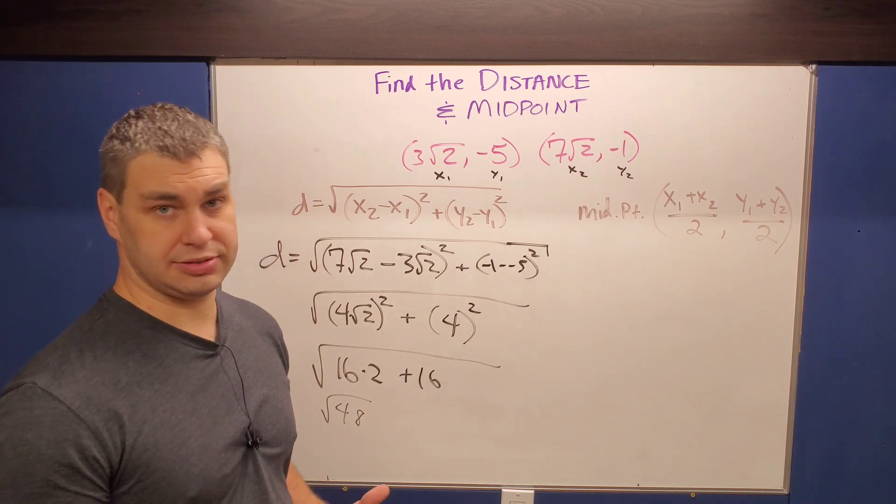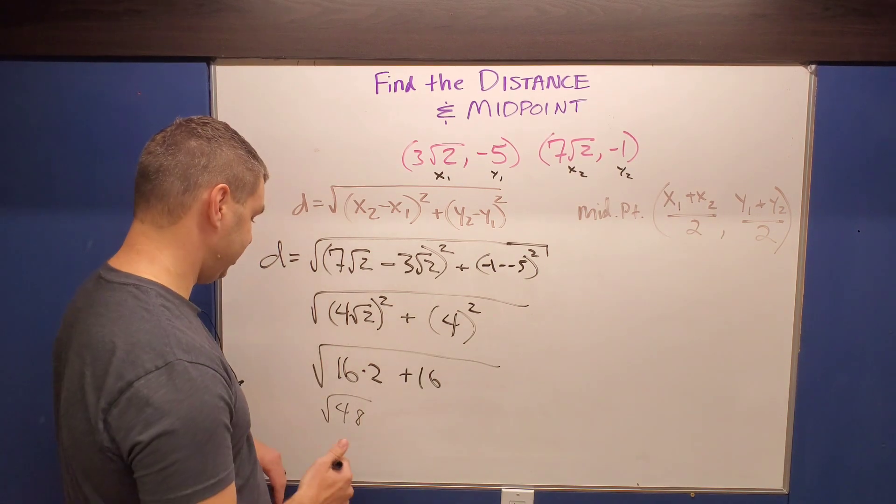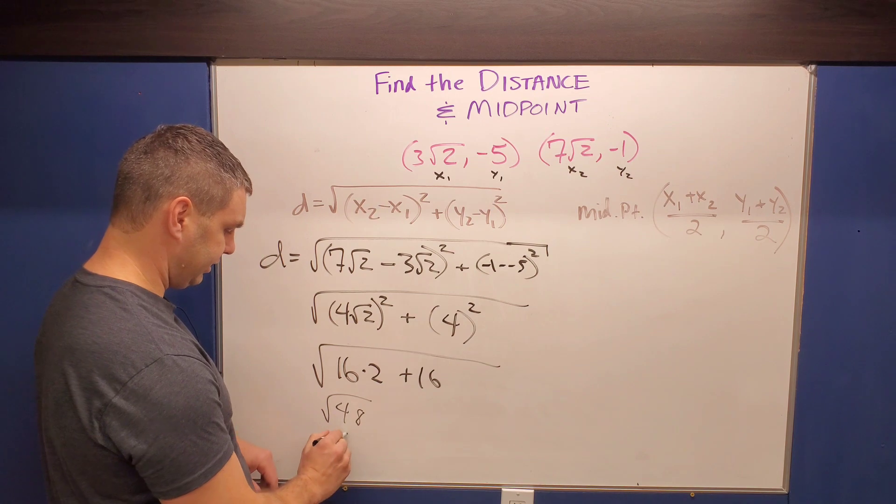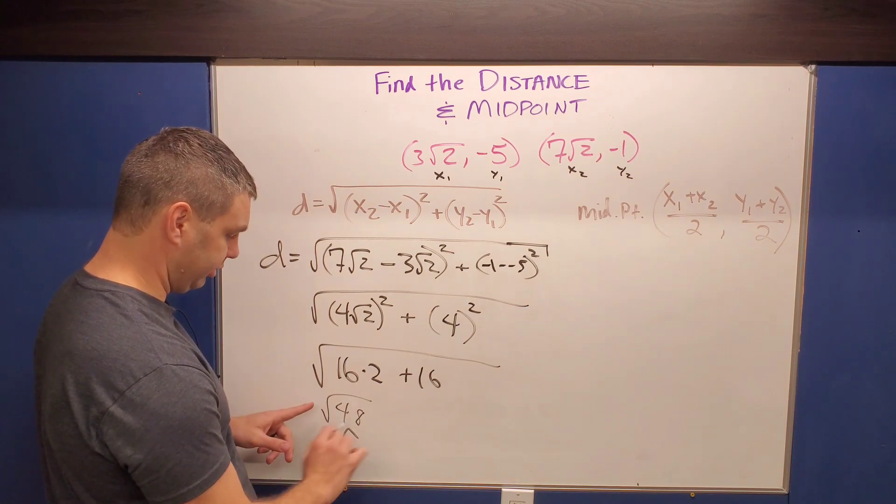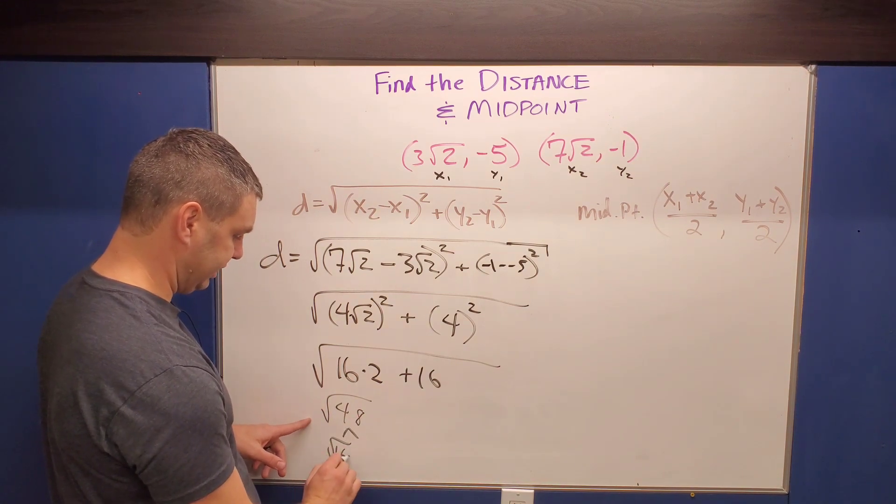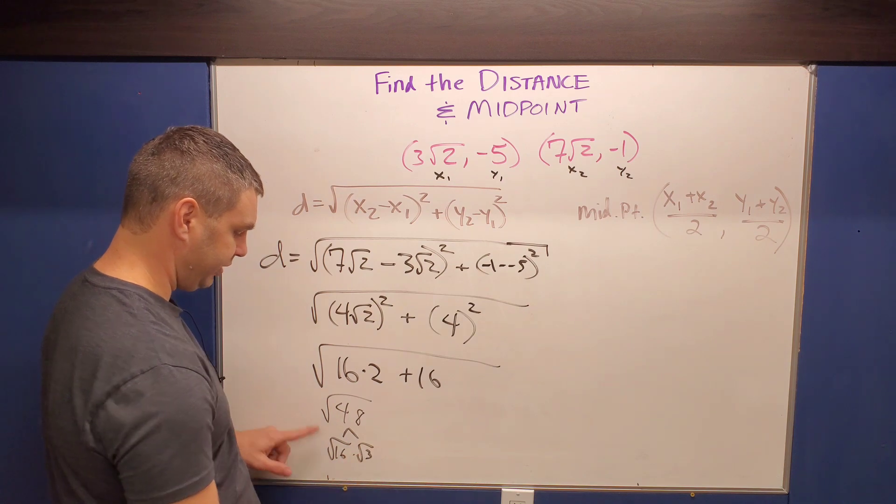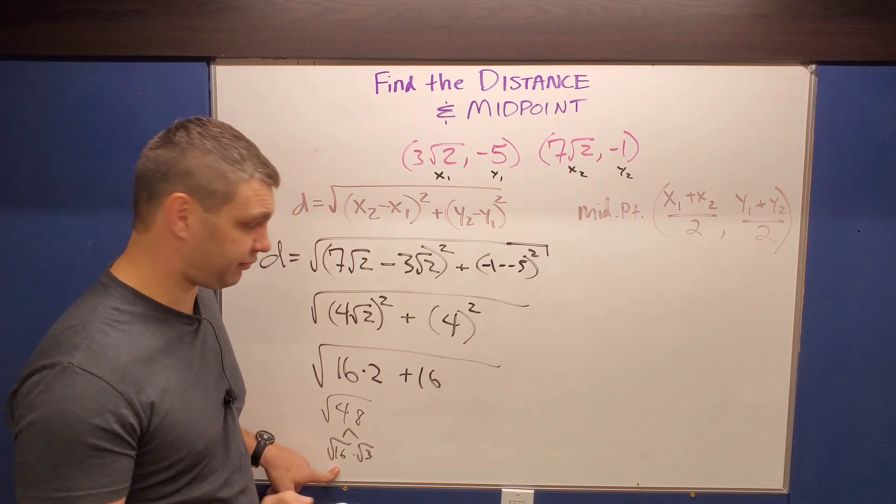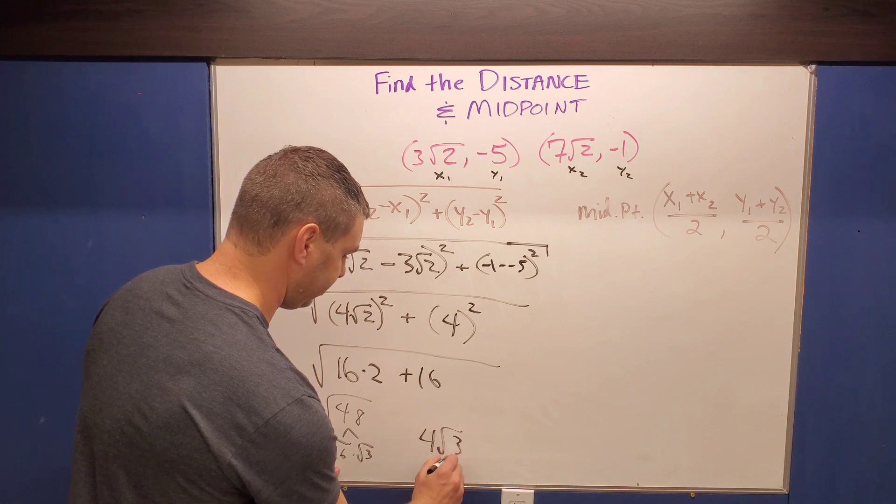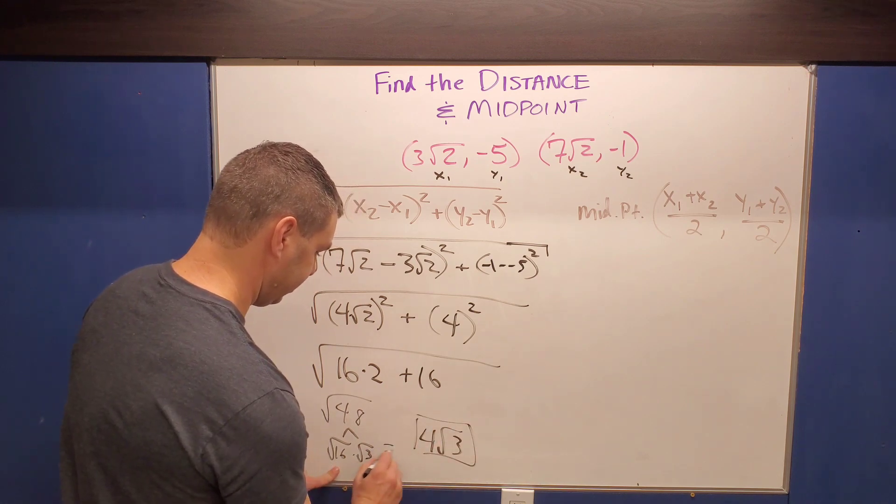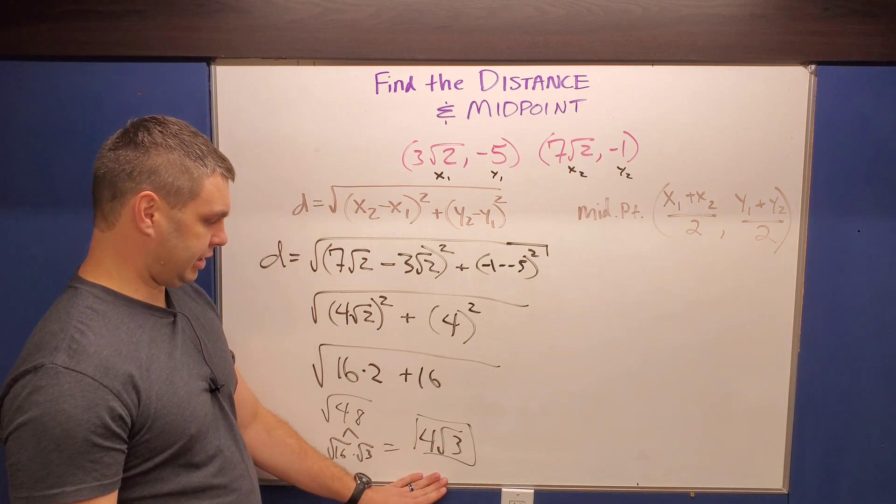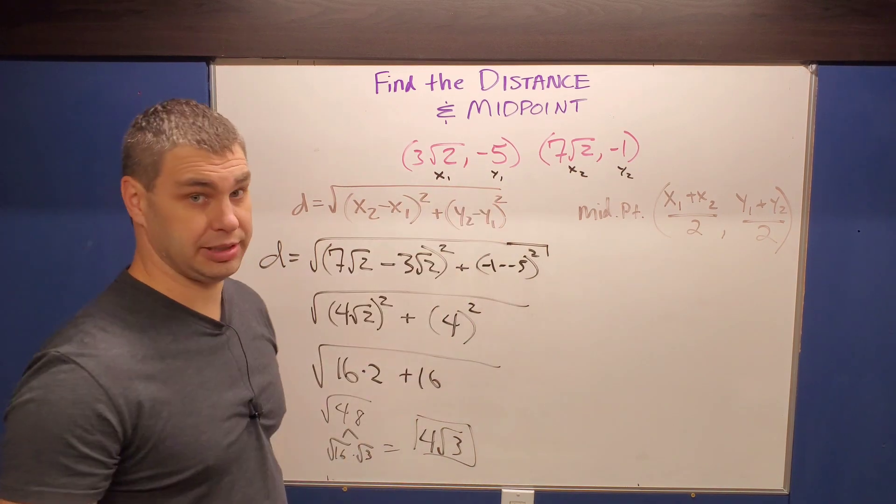And sometimes your teacher makes you simplify this a little bit further, like I know I do with my students. And so 48 can be simplified to say, the square root of 48 can be the square root of 16 times the square root of three. And of course the square root of 16 is four. So I would say the distance here is gonna be four square roots of three. Those two things are equal to each other. That is the distance between those two points up there, pink.